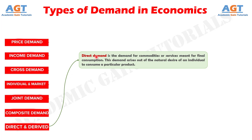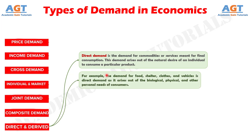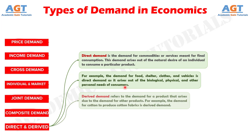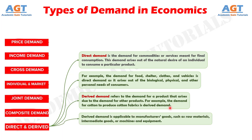Direct demand is the demand for commodities or services meant for final consumption, arising from an individual's natural desire — for example, demand for food, shelter, clothes, and vehicles arising from biological, physical, and personal needs. Derived demand refers to demand for a product that arises due to the demand for other products — for example, demand for cotton to produce cotton fabrics. Derived demand applies to manufacturer's goods such as raw materials, intermediate goods, or machines and equipment, as well as factors of production: land, labor, capital, and enterprise. For example, demand for labor in construction of buildings is derived demand.